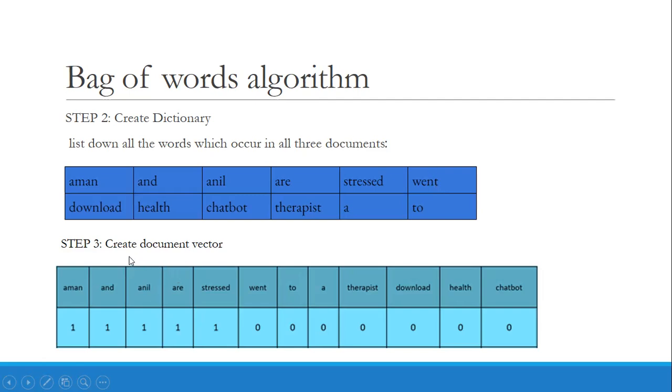Step three, we are going to create the document vector. What is a document vector? This is our dictionary. Now we want to create the document vector for the first document, which is 'Aman and Anil are stressed.' In this dictionary, 'Aman and Anil are stressed' is our document one.